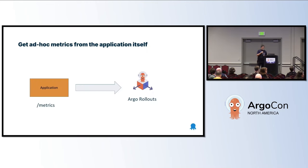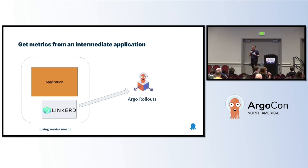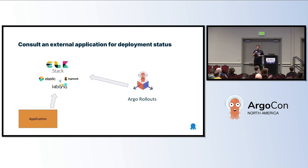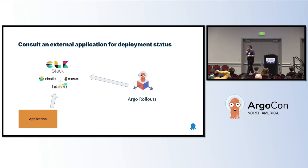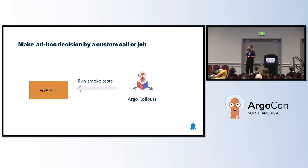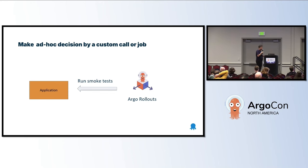Let's see some use cases. The best case scenario is that your application has metrics on its own — a slash metrics endpoint that exposes the metrics you need. That's best case, and what you should try to do. If not, you can cheat by putting Linkerd in the middle, and it provides the metrics for your applications. Or you do something like what Anastasia is trying to do at British Telecom — they don't have metrics on the applications themselves, they have an Elasticsearch instance, and it makes a decision about success. And if everything else fails, you can run custom smoke tests that make the decision for you.